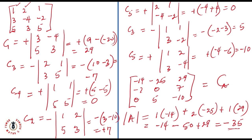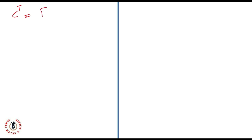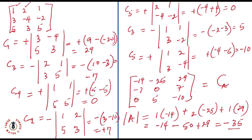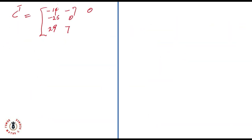Now we already have the cofactor matrix. The next step is to transpose it to get the adjunct. When transposing, rows become columns and columns become rows. So the transposed cofactor matrix — the adjunct — has first row: minus 14, minus 7, 0; second row: minus 25, 0, 5; and third row: 29, 7, minus 10.